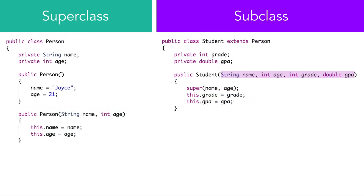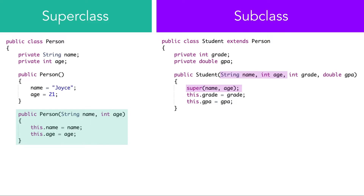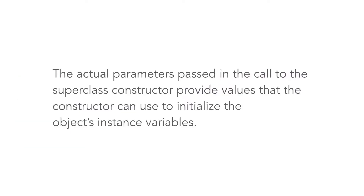In this example, the Student constructor takes name, age, grade, and GPA. The grade and GPA values are set in the Student object, but name and age get passed to the Person class. The actual parameters passed in the call to the superclass constructor provide values that the constructor can use to initialize the object's instance variables.